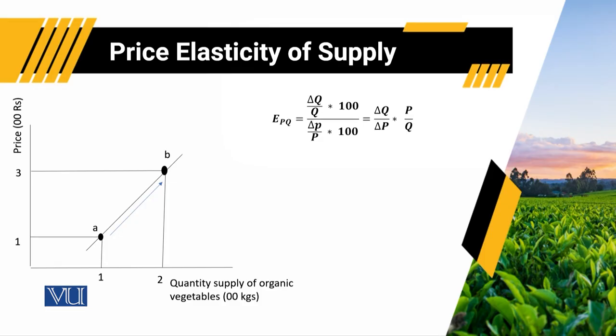In this diagram, we are reporting supply of organic vegetable against different prices. We have taken quantity supply of organic vegetable on the horizontal axis while price is on the vertical axis. For the computation of price elasticity of supply, we will use the formula: change in Q over change in P, multiplied by P over Q.